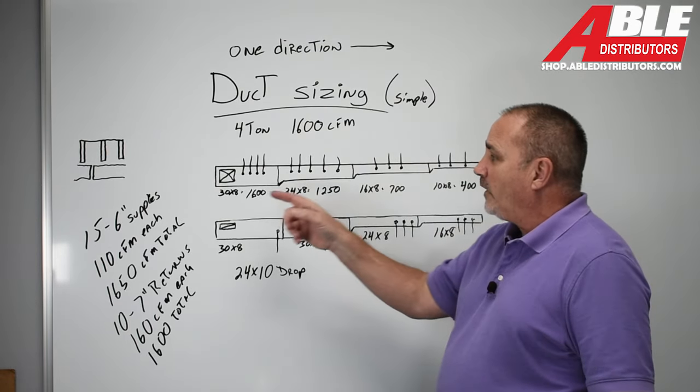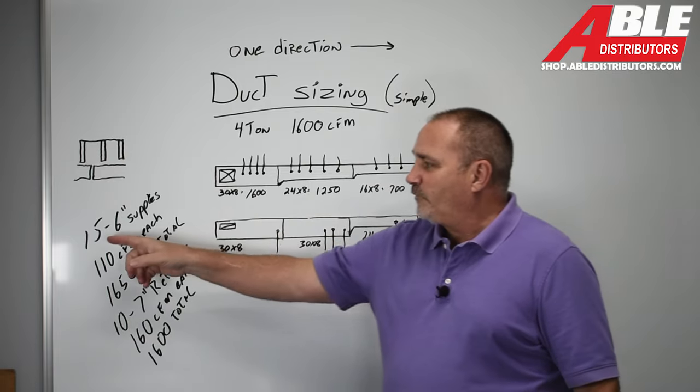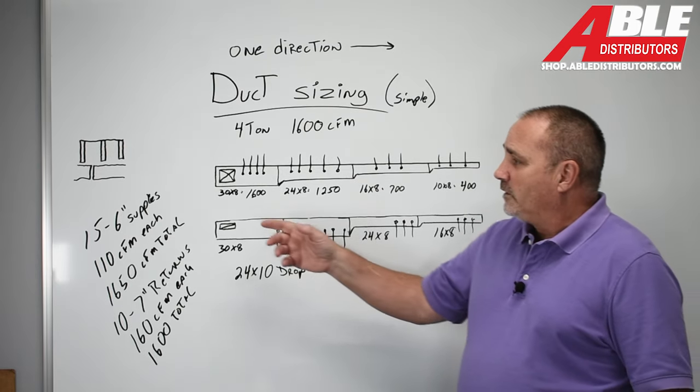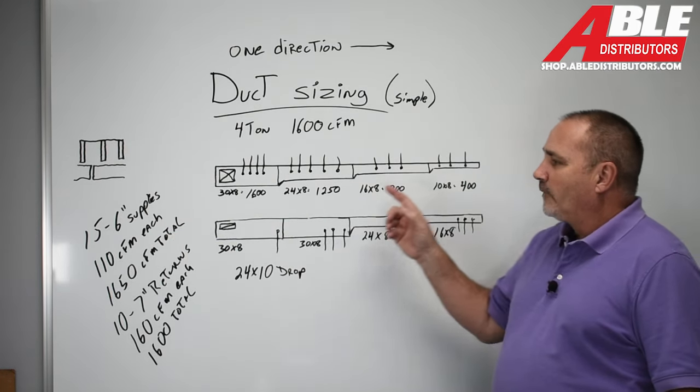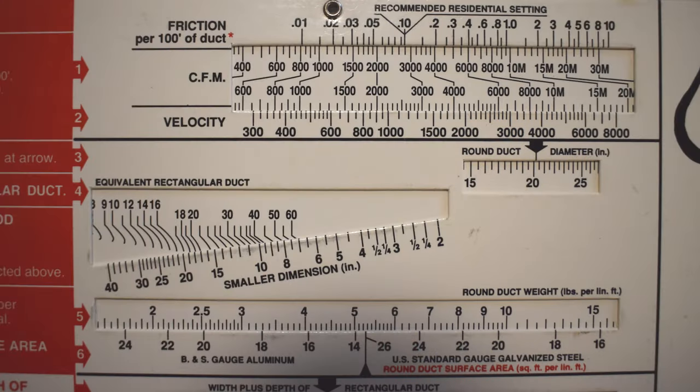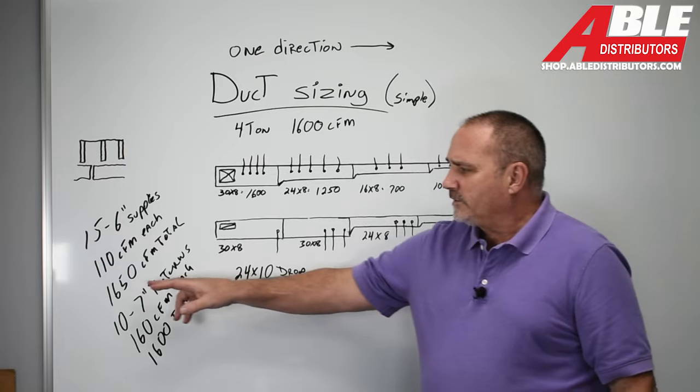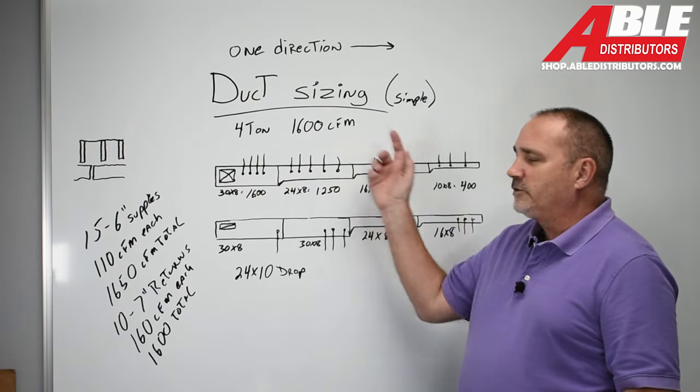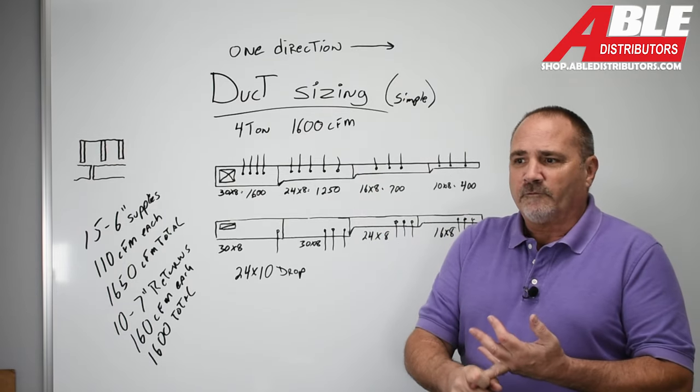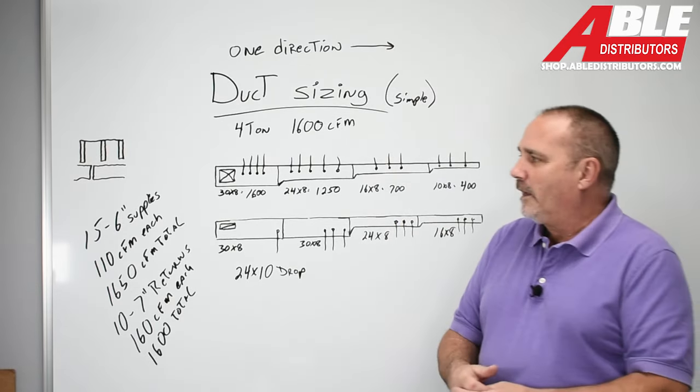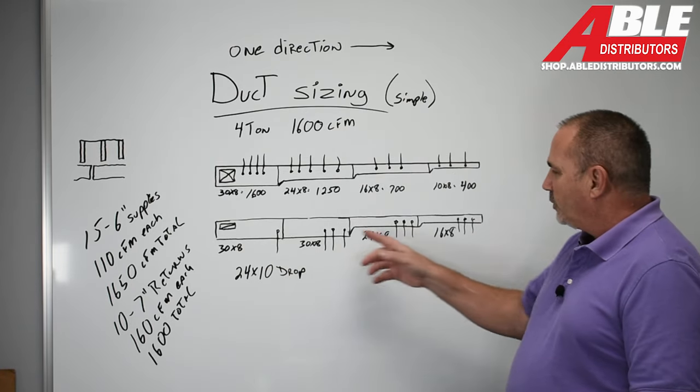1,600 CFMs. So I figured roughly 15 six inch supplies. Typically you have more supplies, more area for supplies than you do returns. So I'm thinking 15 six inch supplies, each one at 110 CFM. And I'm just going off the recommended residential setting on my duct-ulator. And again, it's a good place to start. 1,650 total available CFMs on those supplies. We know we're not going to hit it because as soon as you throw a boot and an elbow in there, the static is not going to let you get a full 110 CFM out the other side. So that's fine.